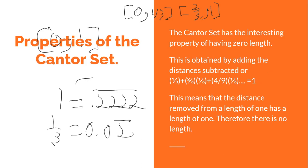The Cantor set has the interesting property of having zero length. It's originally an interval from zero to one, but when you add all the distances that are eventually removed, they sum to one as well. So the Cantor set ends up having technically no length at all.